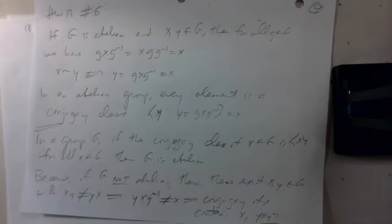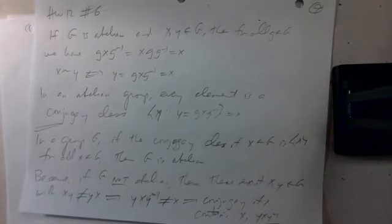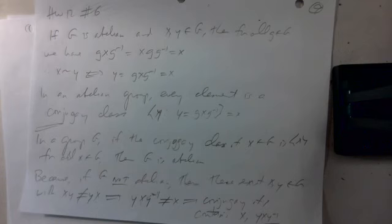So the correct statement is: in an abelian group every element is its own conjugacy class. Problem five is related: the conjugacy class of x consists only of x precisely when x is in the center of the group. In an abelian group every element is in the center, so every conjugacy class is a singleton.